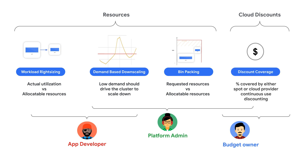Last but not least, discounts. Most of the public cloud providers offer spot VMs and continuous use discount options. Adopting these pricing models will offer significant cost reductions to your Kubernetes clusters. You now know the four golden signals for running reliable, performant, and cost-efficient applications on Kubernetes clusters.